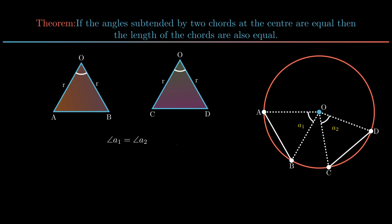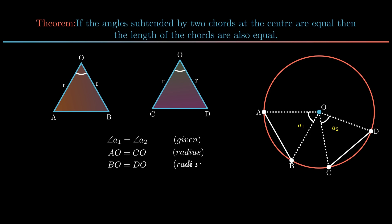As central angle A1 is equal to central angle A2, side AO is equal to side CO, which are the radii of the circle. Similarly, side BO is equal to DO, also radii and thus equal. By SAS rule, triangle AOB is congruent to triangle COD. By corresponding parts of congruent triangles, we conclude side AB is equal to side CD. Hence the theorem is proved.